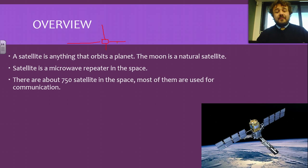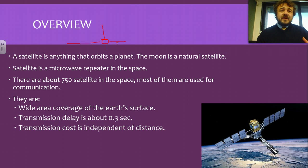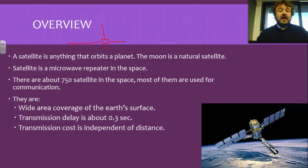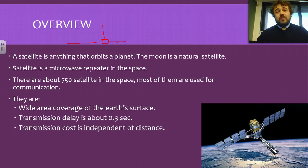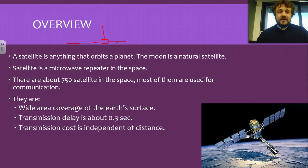Most of Earth's 750+ satellites are communication satellites, and you've also got a mix of GPS and weather satellites. Satellites give us wide coverage of area. There is a slight delay in transmission of about a third of a second both directions. Amazingly, the transmission cost is independent of distance — it doesn't matter how far away you are. Whereas with hardware transmissions like power cables, distance costs, so the further away the more it costs.